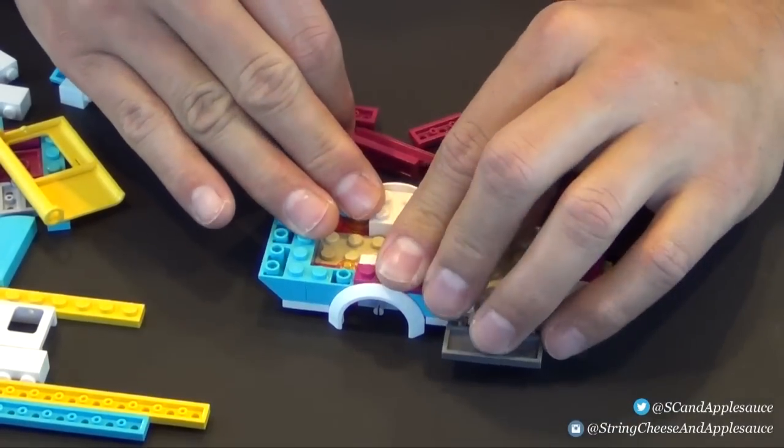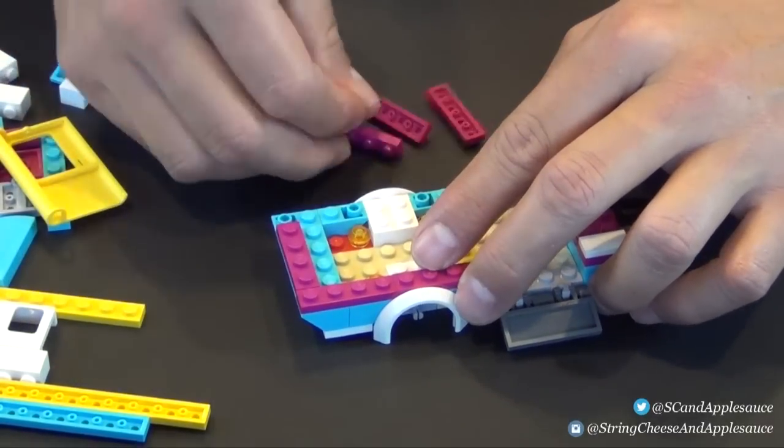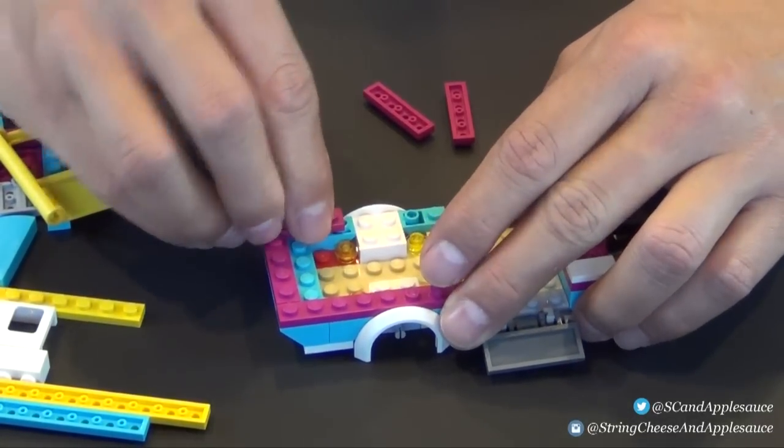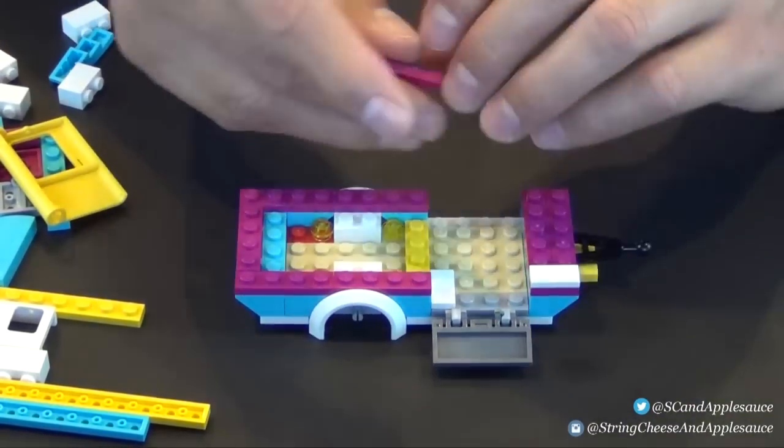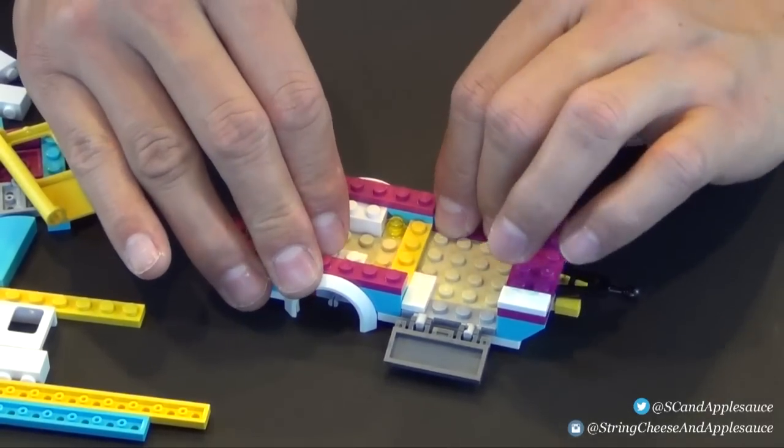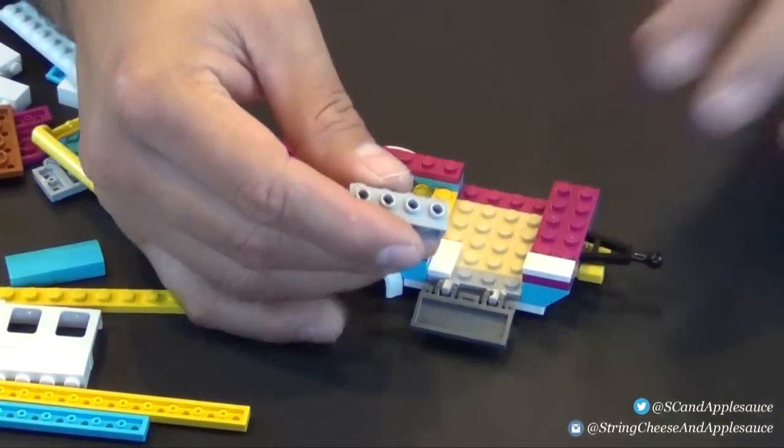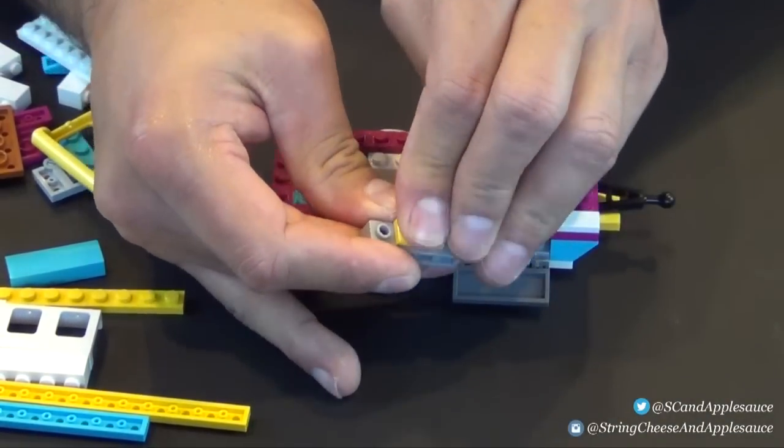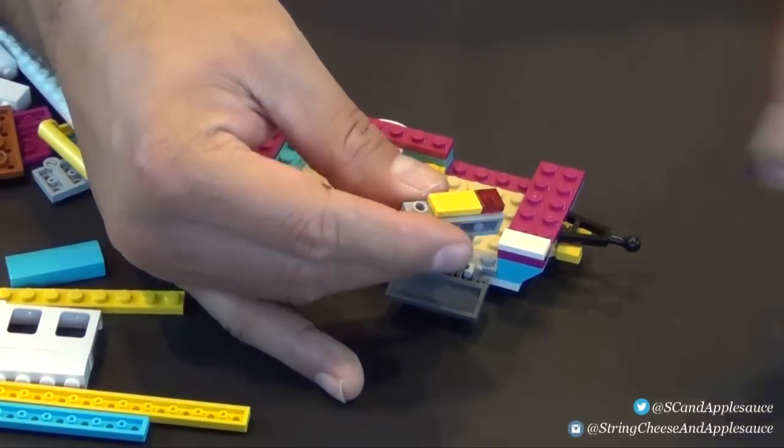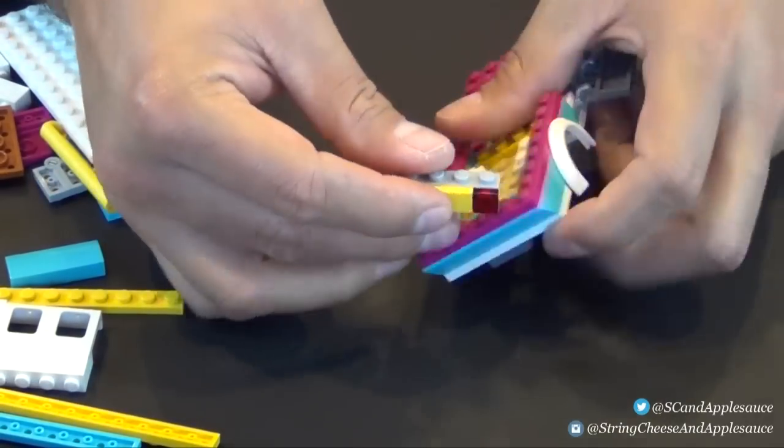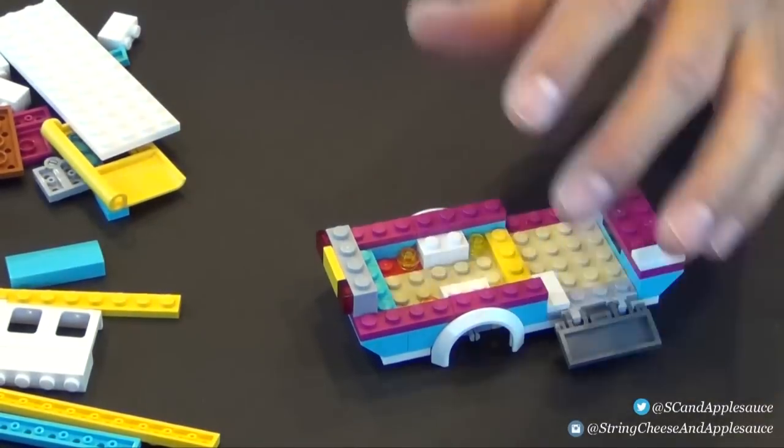But there she is, all ready to go. Let's go ahead and put her in the car. Just to show you, this tiny little bitty car will fit two Friends mini dolls. Not saying they're comfortable, but hey, they're friends, they can sit that close. That's what friends do. All right, now drink water, and let's finish up this caravan.